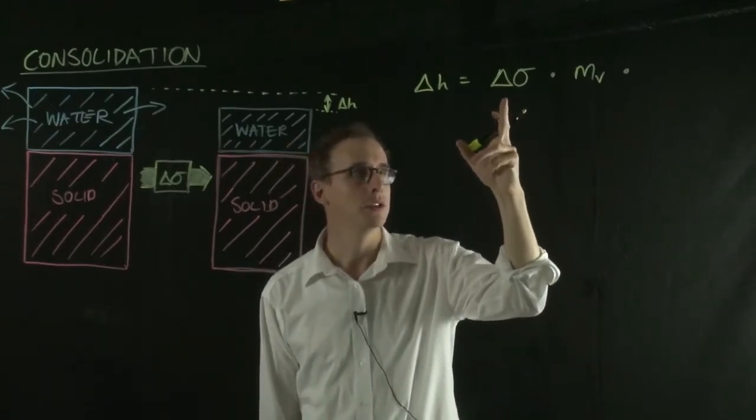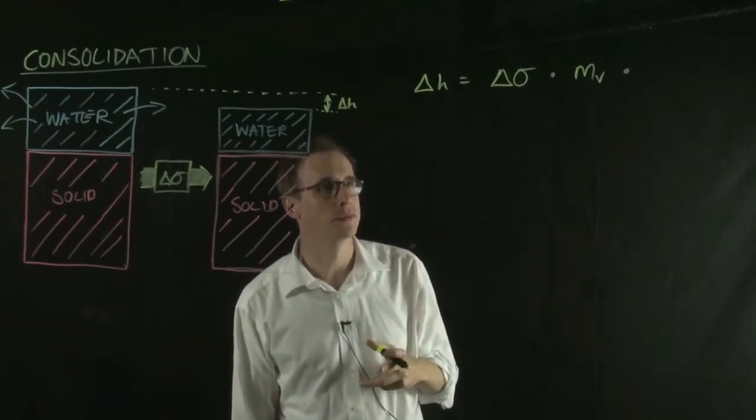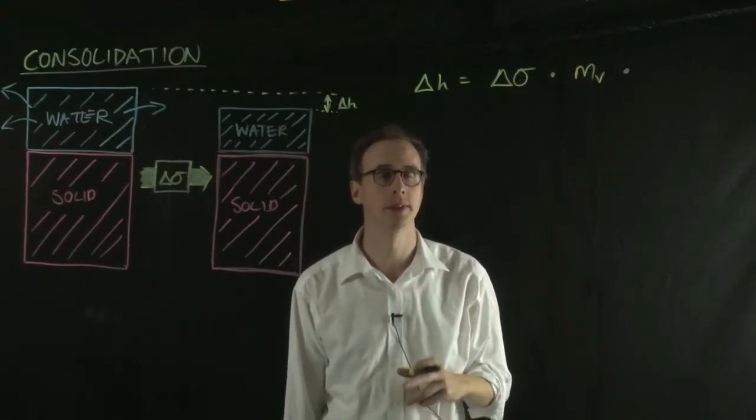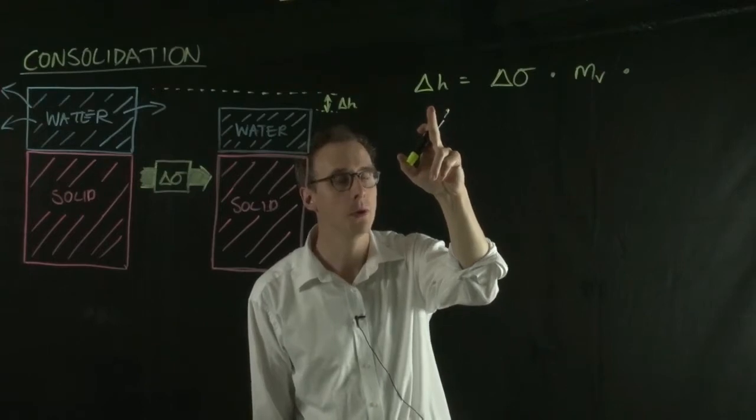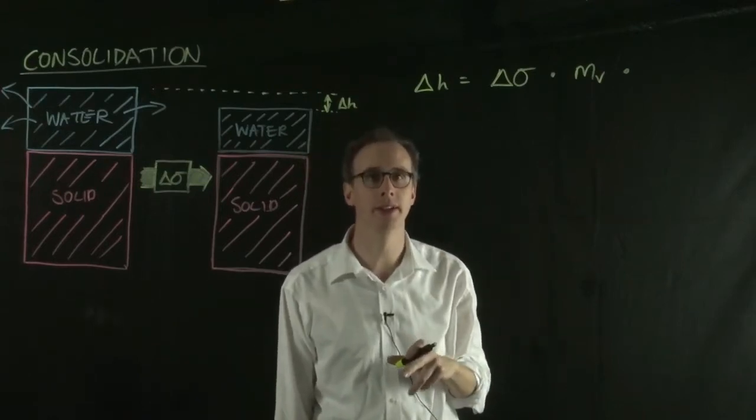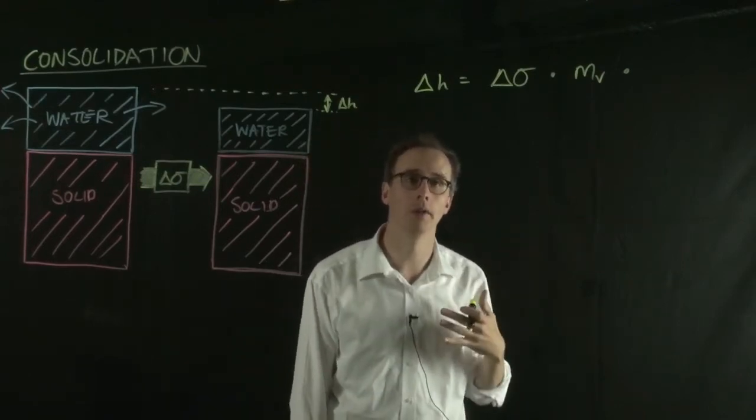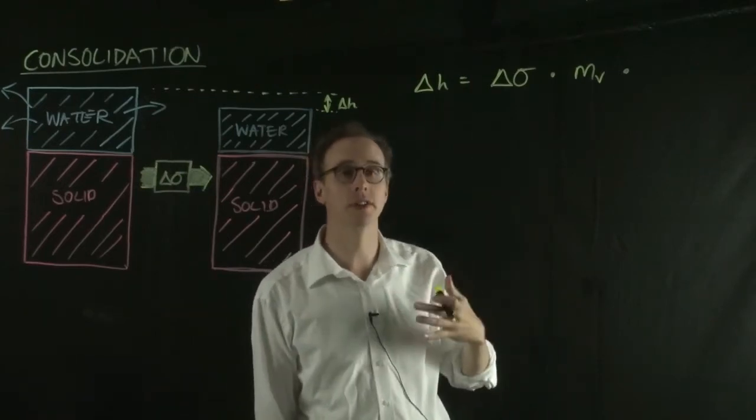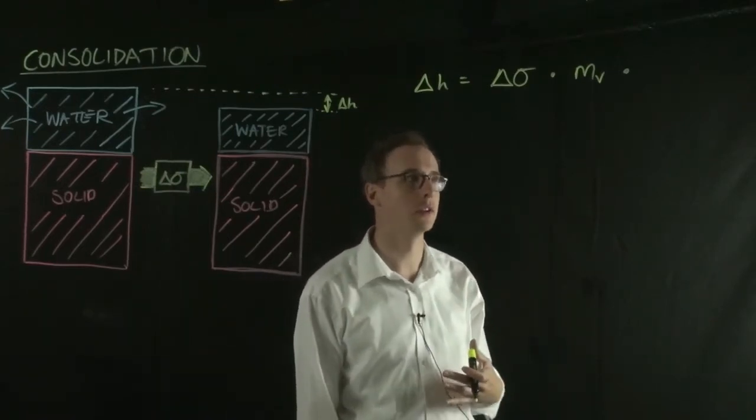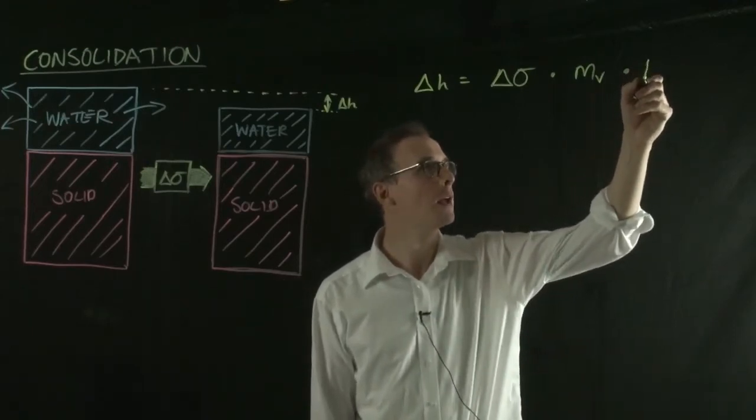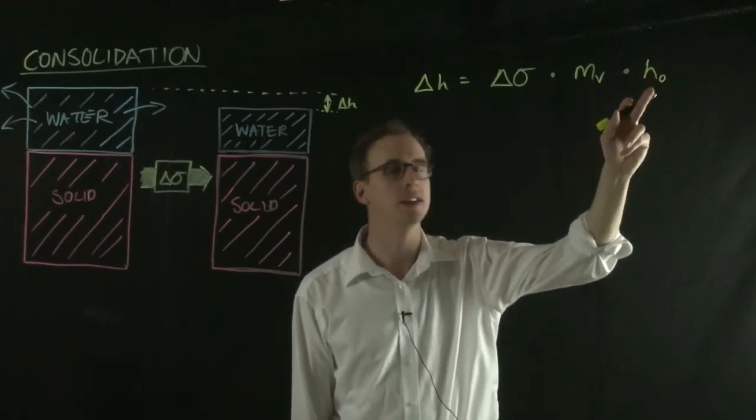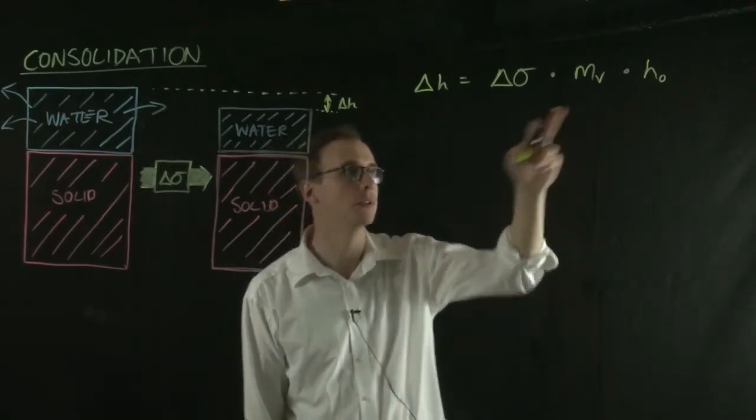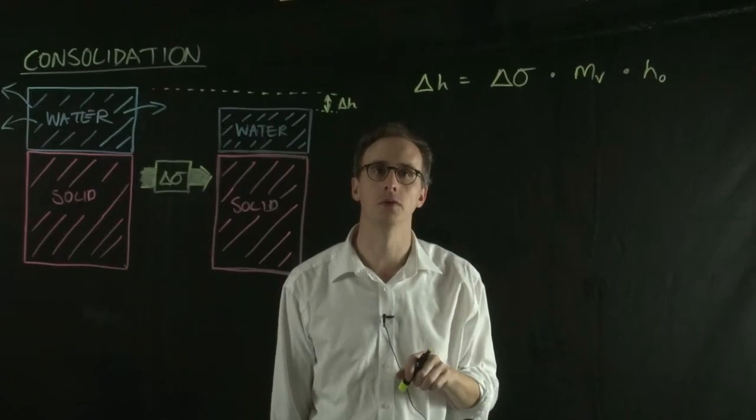It also depends on the total initial thickness of the material. If you take a one-meter soil and subject it to a change in stress with a certain susceptibility to compressibility, that will have a smaller total settlement than if you did the same for three meters of soil. This settlement is proportional to the thickness of the material, H0, the initial thickness. Here we have quite a simple equation for settlement.